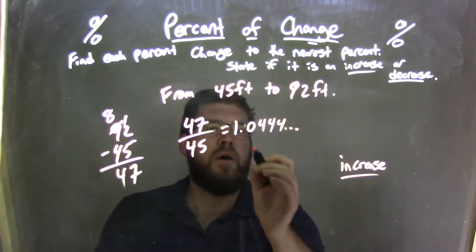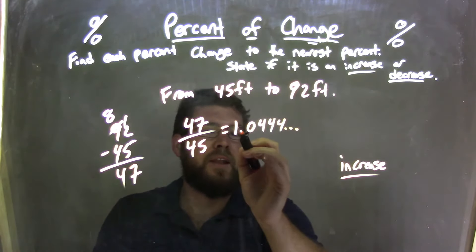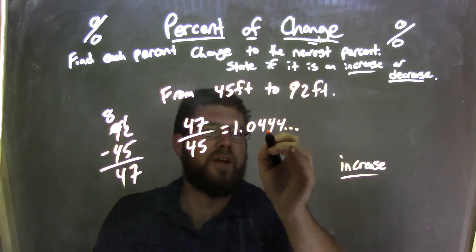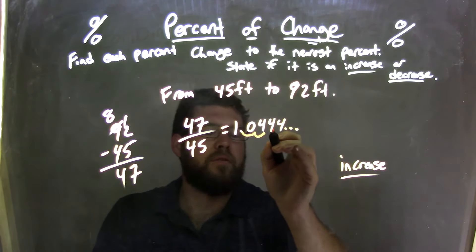Oh wow. Well, if I wanted to do percent, I need to move that over two units, right? So we have 104. And then I look at this number. I move it over two units and look at that number to round it.